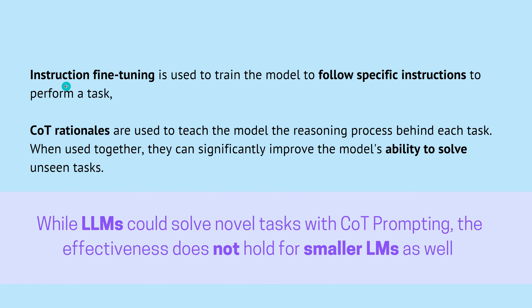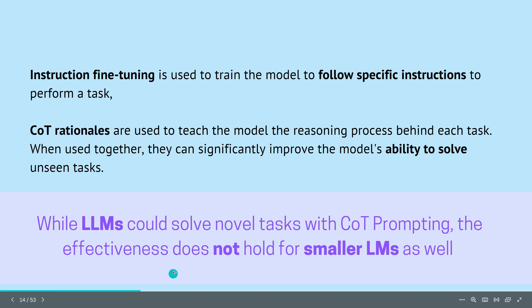Instruction fine-tuning is used to train the model to follow specific instructions, and chain of thought rationales are used to teach the model the reasoning process behind each task. When you combine those two together, they can significantly improve the model's ability to solve unseen tasks. Unfortunately, this is not true for any model size — only large LLMs with 100 billion parameters or more could solve novel tasks with COT prompting. The effectiveness does not hold for smaller language models.